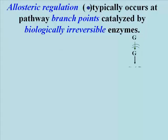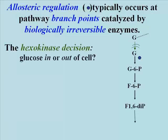Here's an abbreviated view of stage 1 of glycolysis. The first branch point is at the hexokinase step, shown here with a blue dot. The decision here is to either let glucose be metabolized for energy, or leave it free to circulate to other cells.